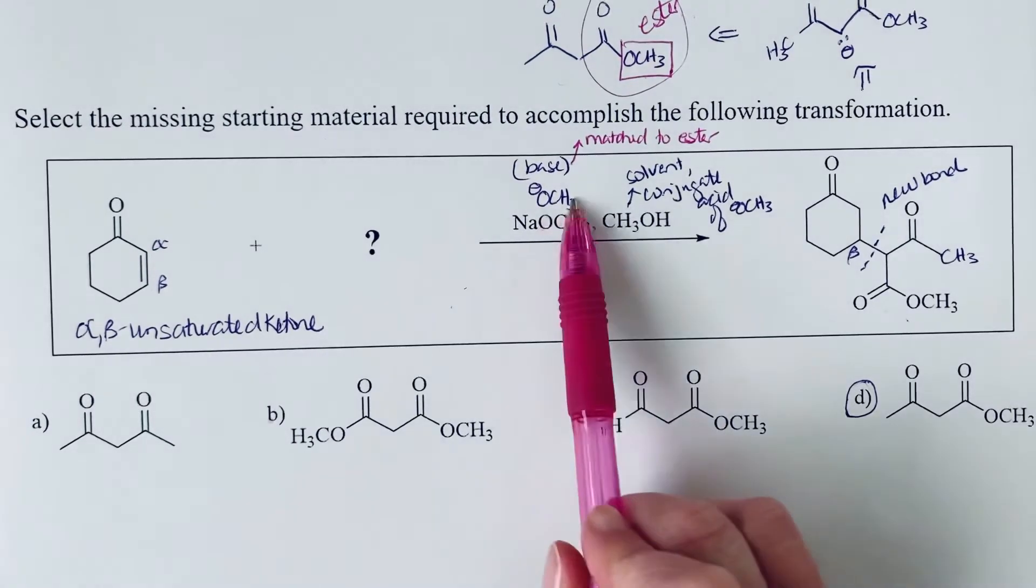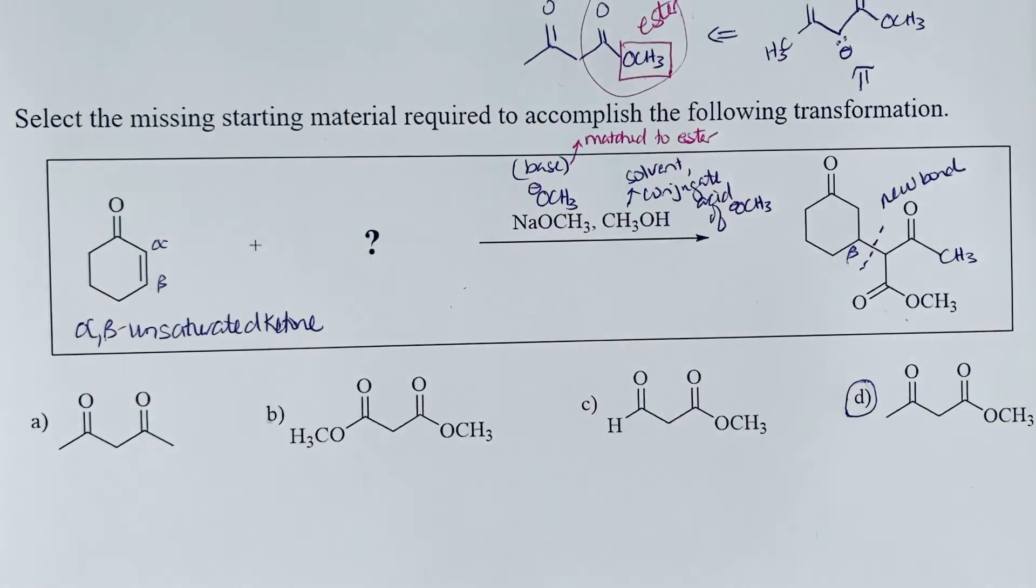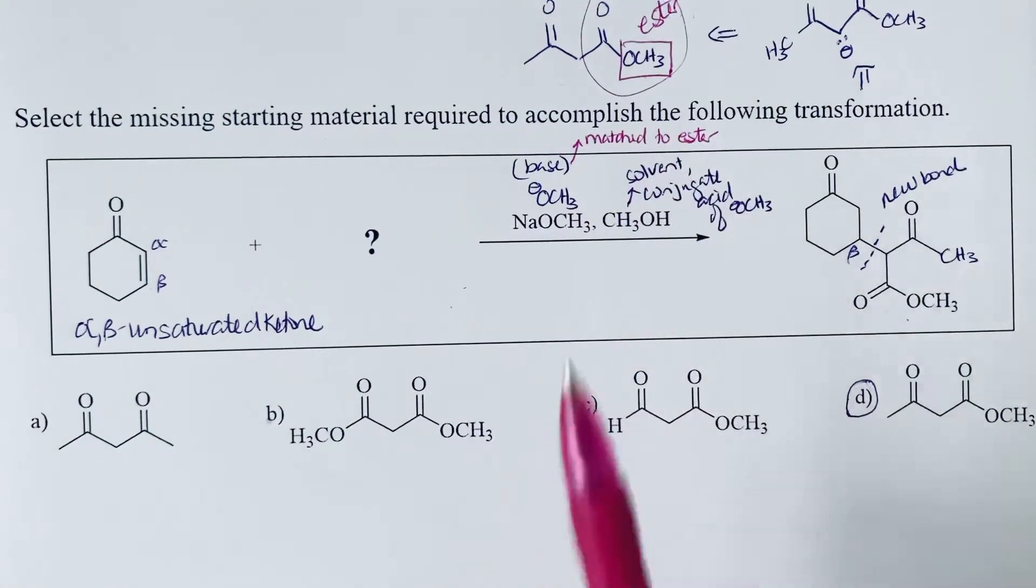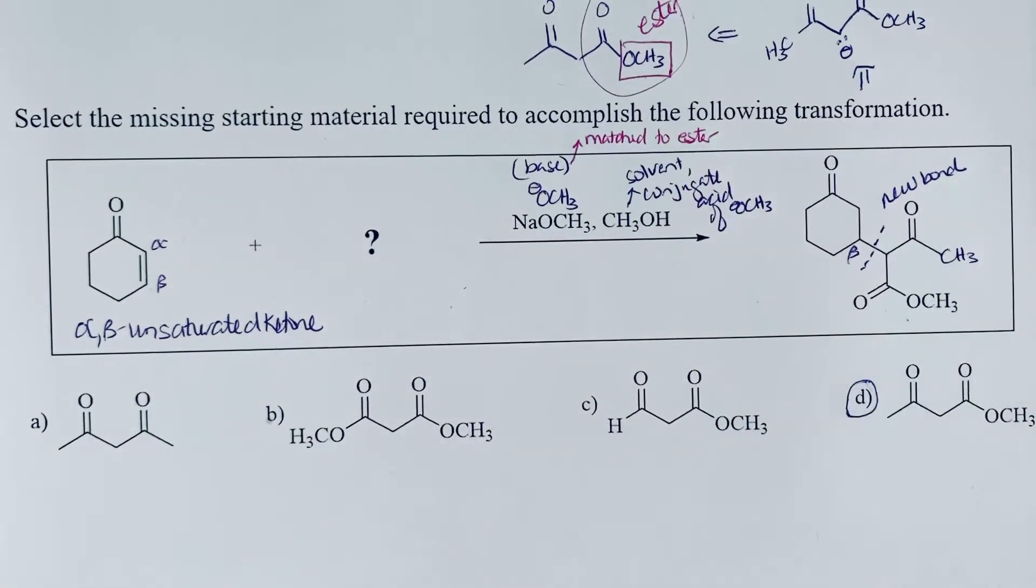So if we had a different base, you could have a transesterification reaction, as we saw in a previous chapter. So we're matching the base to the ester to prevent the transesterification reaction from giving you something different.